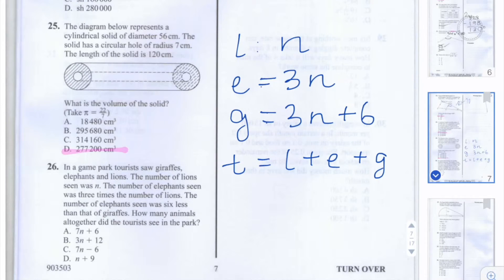The total is equal to n plus 3n plus 3n plus 6, which equals 7n plus 6. So our answer is A, 7n plus 6.